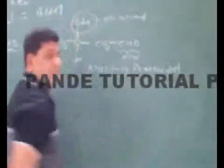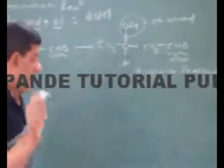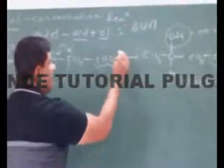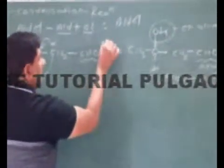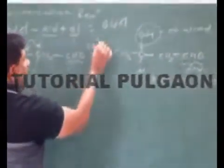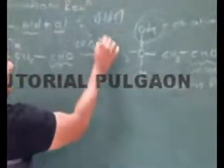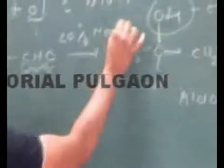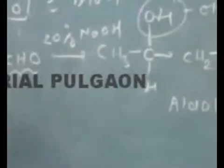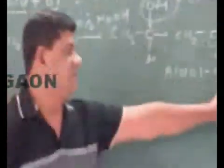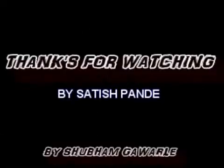Hence its name is called 'Aldol' — as it contains both aldehyde and alcohol groups. Remember, this reaction takes place in the presence of dilute NaOH (dilute base). If you heat this Aldol product, which contains the alpha hydrogen atom, further reactions can occur.